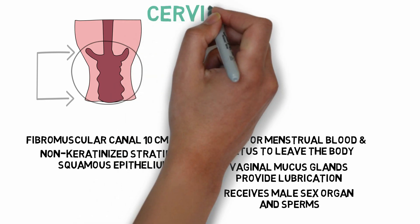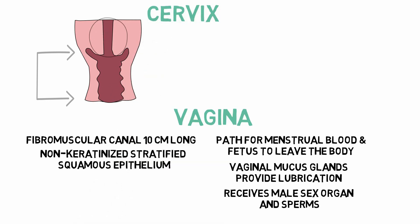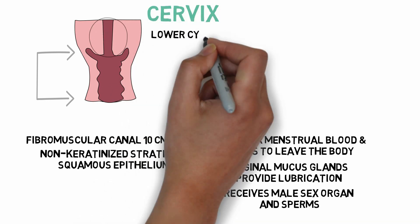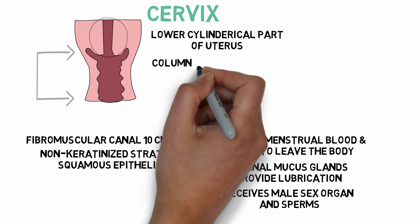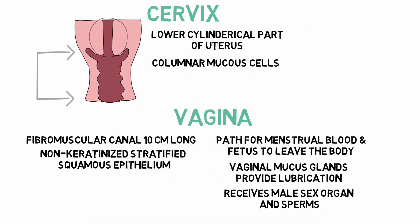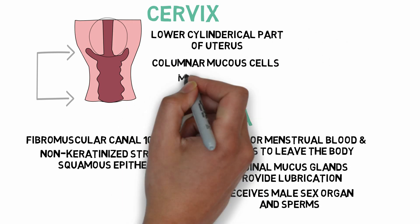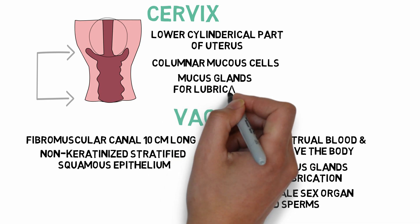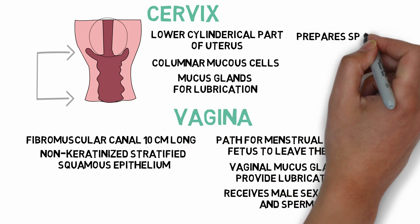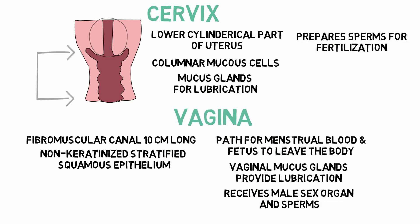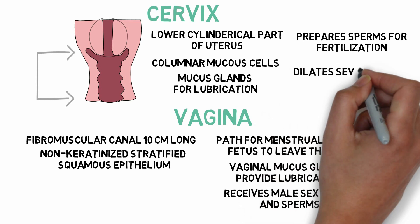The cervix is the lower cylindrical part of the uterus, lined by columnar cells. It contains numerous mucus glands which help in the production of mucus for lubrication. The cervix prepares the sperms for fertilization and also dilates several folds during childbirth.